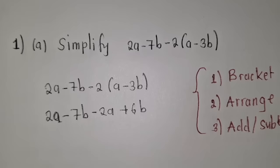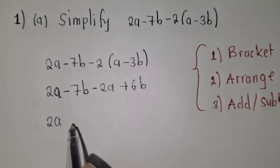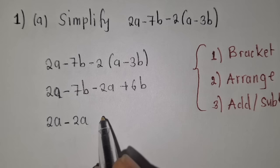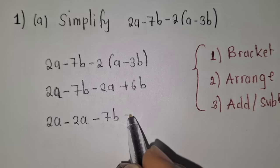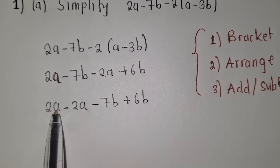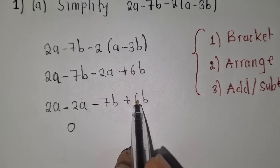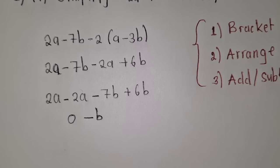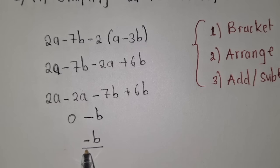Step number 2, we need to arrange the work. We check: we've got 2a — do we have anything else with a? Yes, there is a minus 2a. We are done with a's. We go to minus 7b — do we have anything with b? Yes, it's plus 6b. So we've arranged the work according to like terms. Step 3: 2a minus 2a gives us 0. Negative 7b plus 6b is minus b. So our final answer is just negative b, because 0 minus b is negative b.